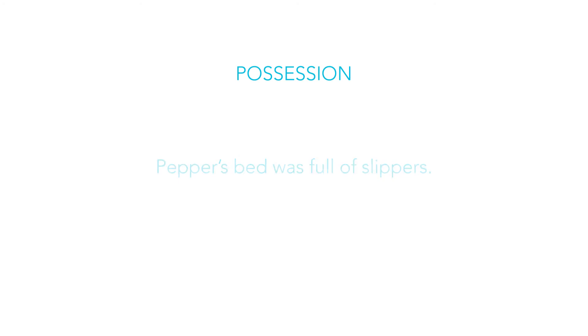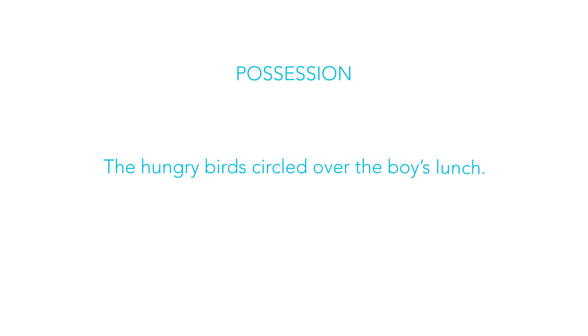Normally, when using an apostrophe for possession, we put it before the S — for example, 'The hungry bird circled over the boy's lunch.' However, if the word is plural and already ends with an S, we put the apostrophe after the S — for example, 'The hungry bird circled over the boys' lunch.'